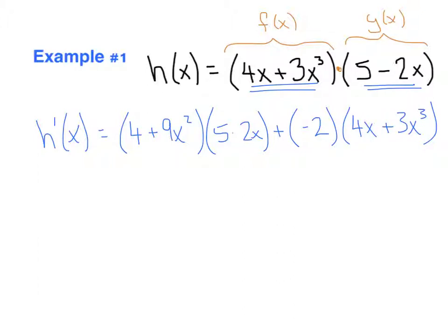Now, from this point, there's still more work to be done. For instance, right here I would have to do some foiling, and then over here I would distribute the negative 2, and then I would just combine all my terms. But everything that's left to be done is just purely algebra, and so the point of this video is just to focus on the process of deriving with the product rule. And so with that being said, we're ready for example number 2.